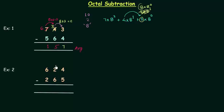4 minus 5, we have to take borrow because 4 is smaller than 5. Borrow is 8. 8 plus 4 is equal to 12. 12 minus 5 is 7. 2 will now be written as 1.